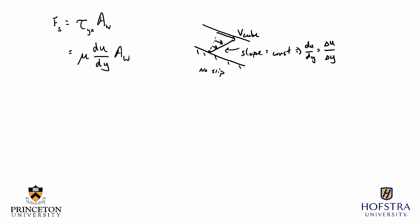The change in velocity at the top is V cube, and the initial velocity at the bottom is zero. The change in height is the film thickness minus zero. So du/dy equals V cube divided by the thickness. The shear stress force F sub S equals mu times V cube over the thickness, times the wetted area.